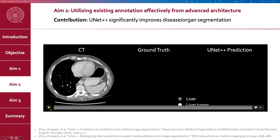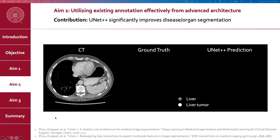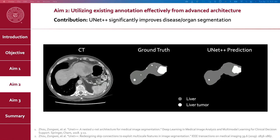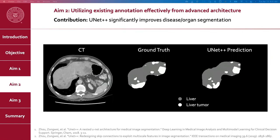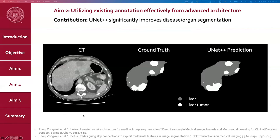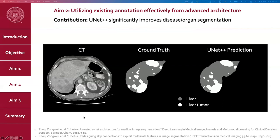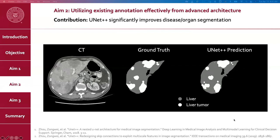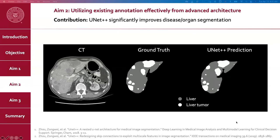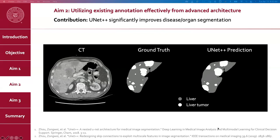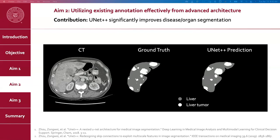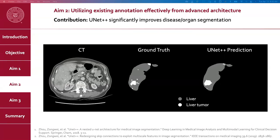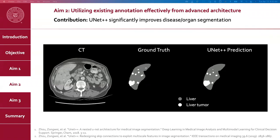Besides the technical details and quantitative results, let's look at how well UNet++ segments liver tumor and liver organ from CT images. This is a patient with liver tumor. The left figure shows the original CT image, the middle shows the ground truth given by human experts, and the right shows the prediction of UNet++. The prediction of UNet++ is very similar to human annotation.